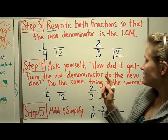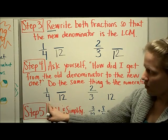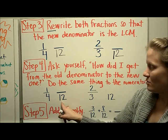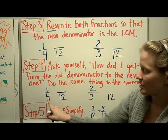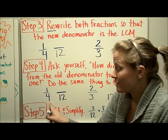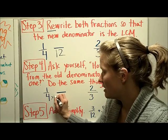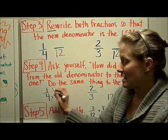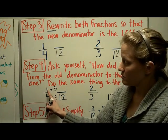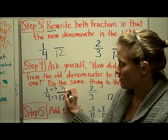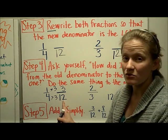Step four: ask yourself how did I get from that old denominator to the new one, and then do the same thing to the numerator. How do I get from four to twelve? I multiply by three on the denominator, so I need to do the same thing to the numerator. One times three is three, so one-fourth is equivalent to three-twelfths.